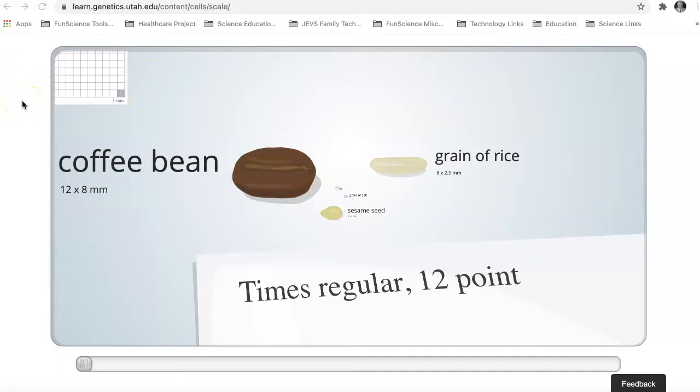So one of the really cool things about science is that we can learn lots of different things about life, and all living things on our planet are made up of cells. And what this learning tool does is it helps us get a sense of how small these cells really are.